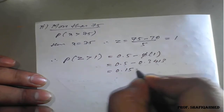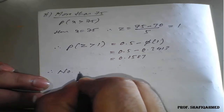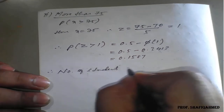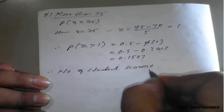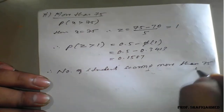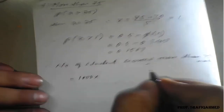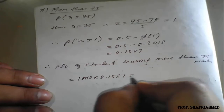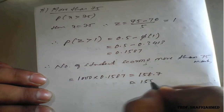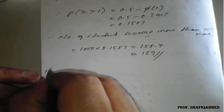The simplification gives 0.1587. Therefore, the number of students scoring more than 75 marks is 1000 into 0.1587, which is 158.7, equivalent to 159 students.